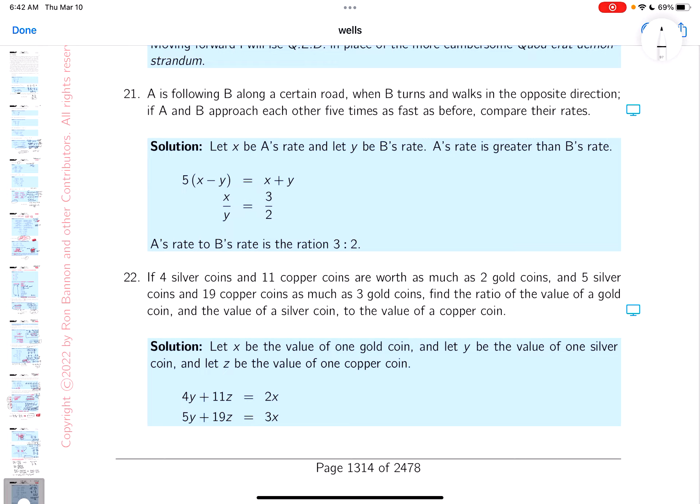Reading through the problem: A is following B along a certain road. So if A is following B, B's up here, A's back here, and if he's following, they're going in this direction. I'm going to say A's rate is X miles per hour, and B's rate is Y miles per hour. A is following B along a certain road.